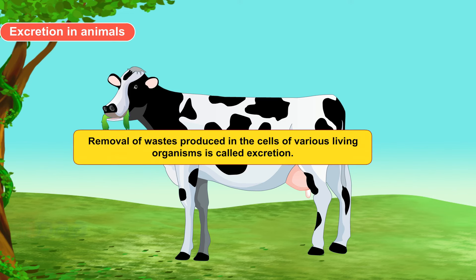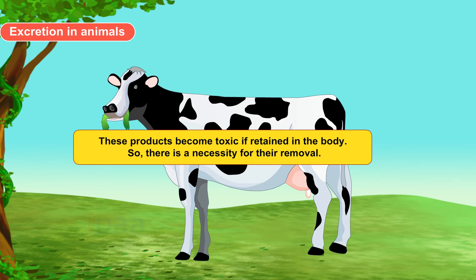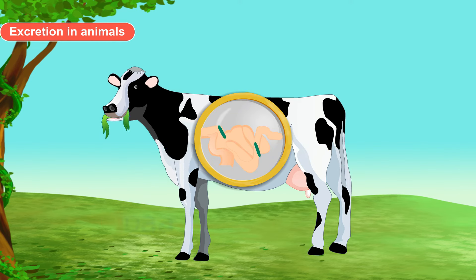Excretion in Animals. Removal of wastes produced in the cells of various living organisms is called excretion. Many waste products are produced by the cells during various life processes. These products become toxic if retained in the body, so there is a necessity for their removal. This process of removal of toxic substances is excretion. The organs involved in excretion form the excretory system.